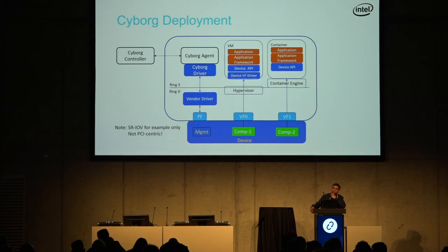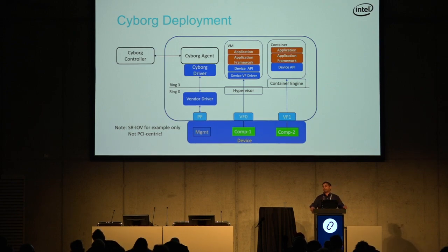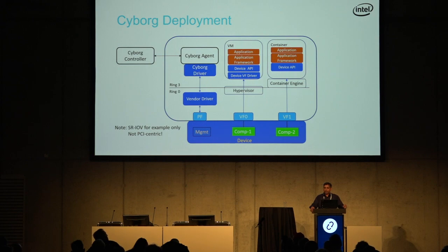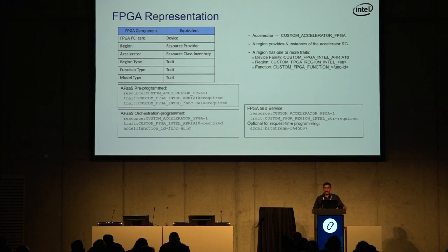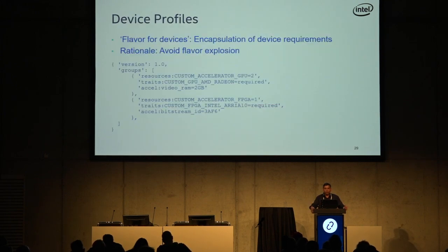There are no immediate plans to embed device profiles into image properties, but you can see the appeal — you can put all or part of the device profile into your image. One issue is that you may have multiple groups in your device profile, asking for more than one accelerator, and if the VM image says a certain property you want, you don't know which accelerator it applies to. There are some things we still need to solve before getting to that.